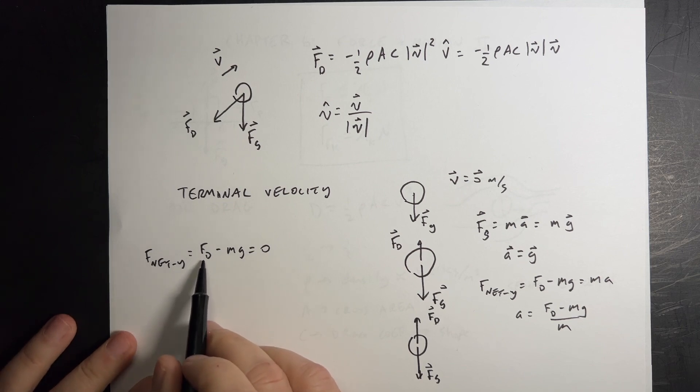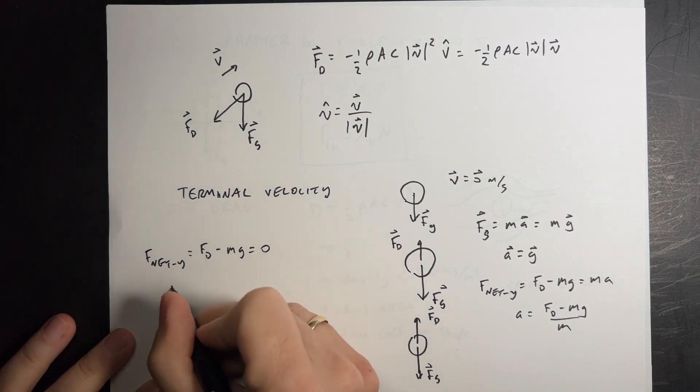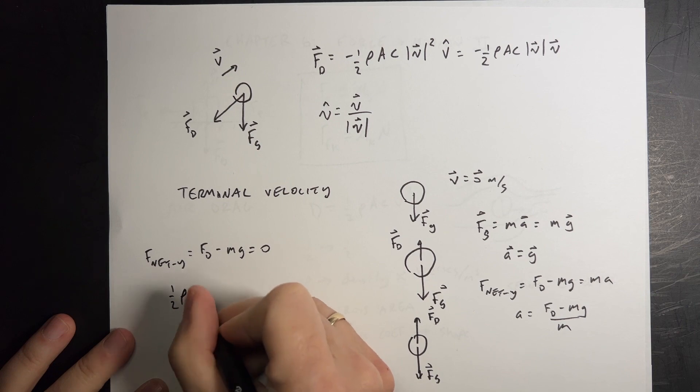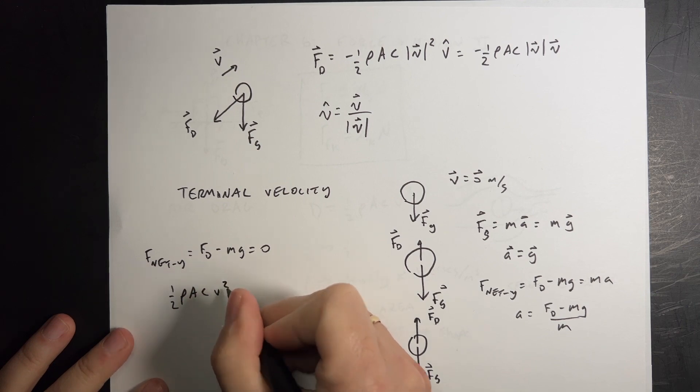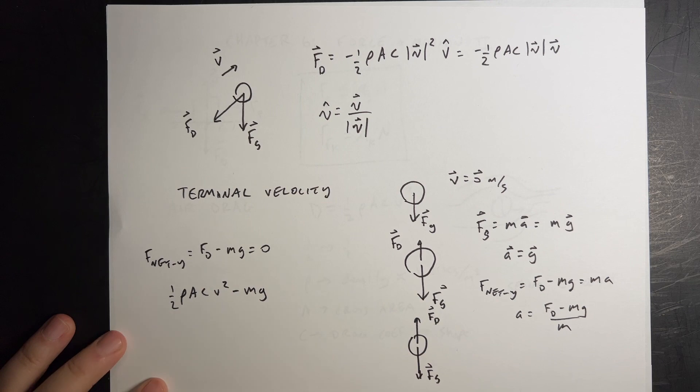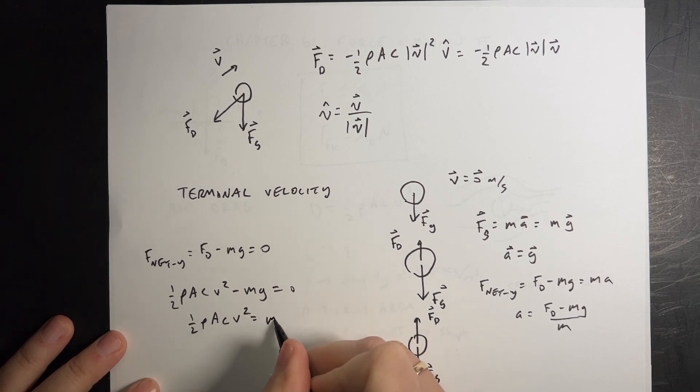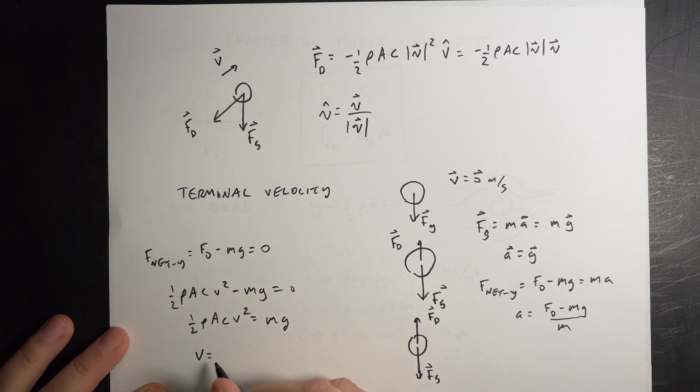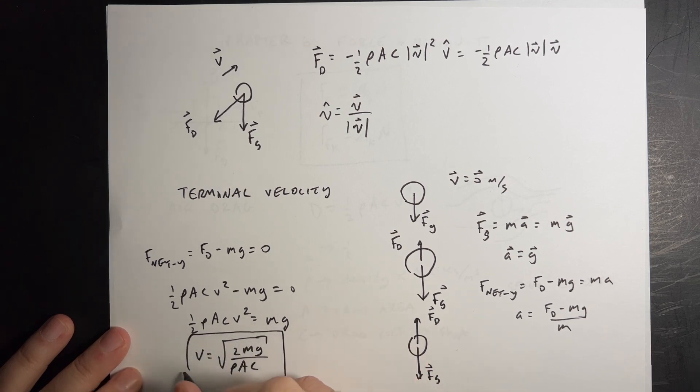So you can actually solve for terminal velocity. Let's put in our value for our expression for FD. I have one half rho AC V squared minus MG. And I want to solve for V, so I'm going to equal zero. So I get one half rho AC V squared equals MG. And then I just have to divide by all that stuff and take the square root. We can do that in one fell swoop. It's going to be two MG over rho AC. And that's the velocity. That's the terminal velocity.